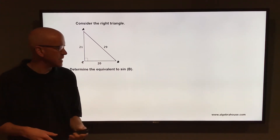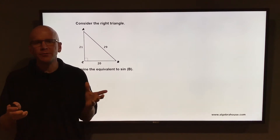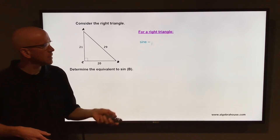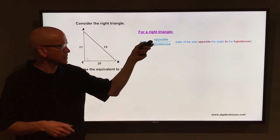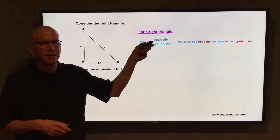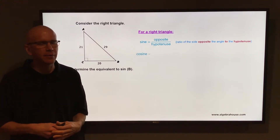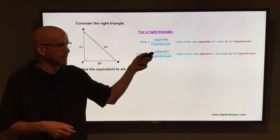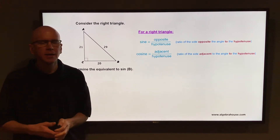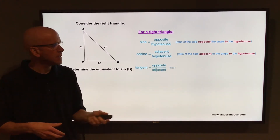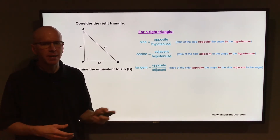Consider the right triangle and determine the equivalent to the sine of B. On a right triangle, there are trigonometric ratios. First is the sine of an angle — the sine of an angle is the ratio of the side opposite that angle to the hypotenuse. Next is the cosine of an angle. And finally, the tangent of an angle is the ratio of the side opposite that angle to the side adjacent to that angle.